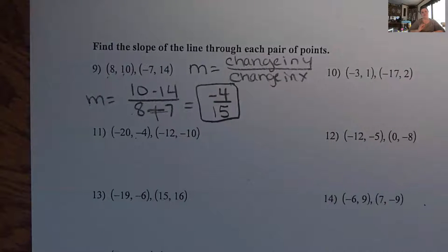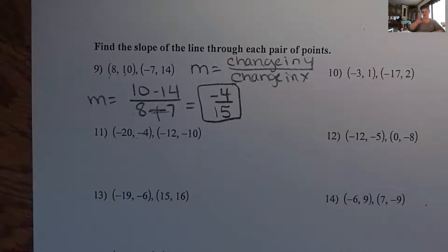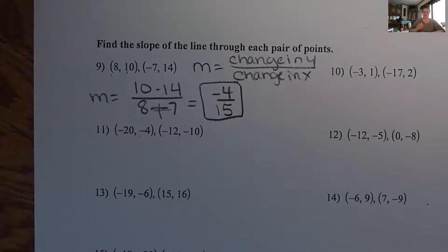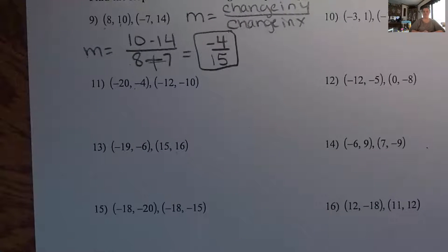Just a little review: if zero is in the numerator, which is on top, then your answer is zero. If zero is in the denominator, which is on the bottom, then that's undefined — you cannot divide by zero, that is undefined. A graph with undefined slope would be straight up and down.